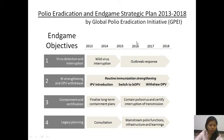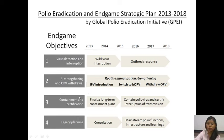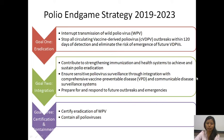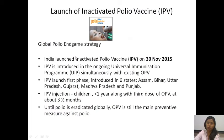The polio endgame objectives include early detection and interruption of any transmission, strengthening routine immunization, and withdrawing oral polio vaccine with introduction of IPV in a phased manner — first introducing IPV, then switching to bivalent OPV, then completely withdrawing OPV. The main goal is to stop all circulating VDPV outbreaks within 120 days of detection and eliminate any risk of emergence of future VDPVs. India has now launched the inactivated polio vaccine in its schedule in a phased manner, expanded to most states and included in the National Immunization Schedule.